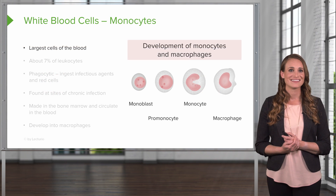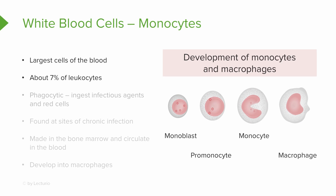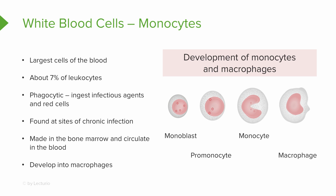Next, the monocytes. Monocytes are the largest cells of the blood. They compose about 7% of the leukocytes. They're phagocytic, which means they ingest infectious agents and red blood cells. They're found at the sites of chronic infection, and these are made in the bone marrow, and then they're going to circulate around in the blood. These are young, and they're going to eventually develop into macrophages. Here you see the timeline: when they come out, they're just a monoblast, then they mature into a promonocyte, into a monocyte, which will further differentiate into a macrophage.